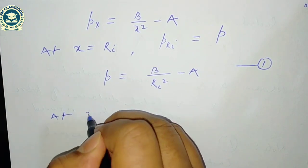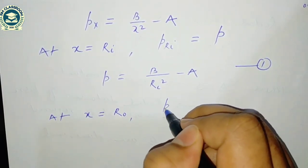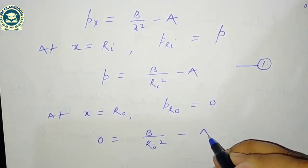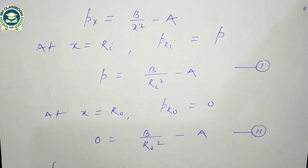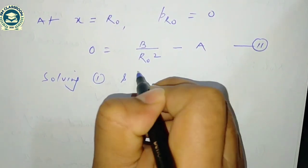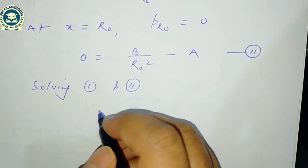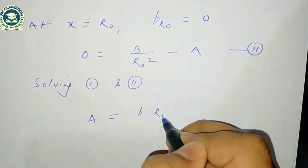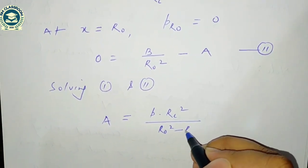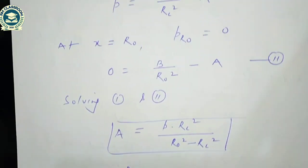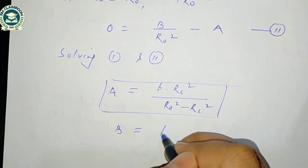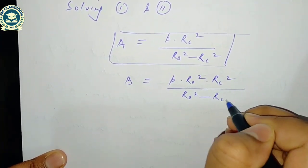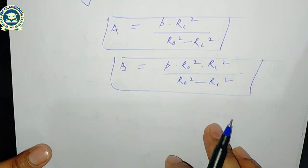At the outer surface when x = R₀, radial stress equals zero: 0 = B/R₀² − A. This is the second condition. By solving equations one and two, we get: A = P·Ri² / (R₀² − Ri²), and B = P·R₀²·Ri² / (R₀² − Ri²), where P is the internal fluid pressure, R₀ is external radius, and Ri is internal radius.